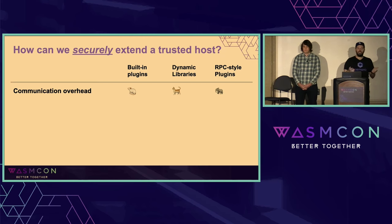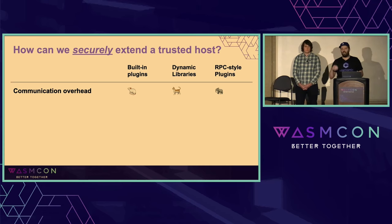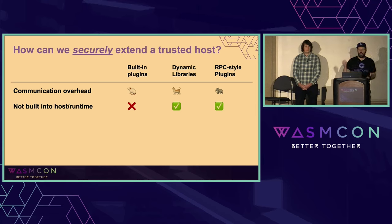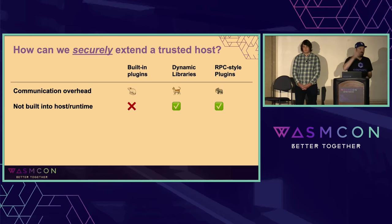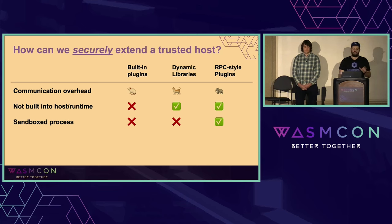Let's talk over a few different trade-offs. Communication overhead: obviously your least communication overhead — basically none — is if you build in your plugins. Dynamic libraries are a little bigger but not much. RPC-style plugins have a communication overhead even if they're local. But are things not built into the host and runtime — meaning we're avoiding that dependency issue? Built-in plugins: big no. Dynamic libraries: they're separate, loaded in dynamically, not part of your dependency tree, you could technically swap them out. RPC-style plugins: same thing, those can be swapped out.